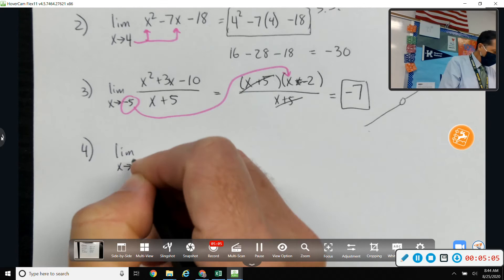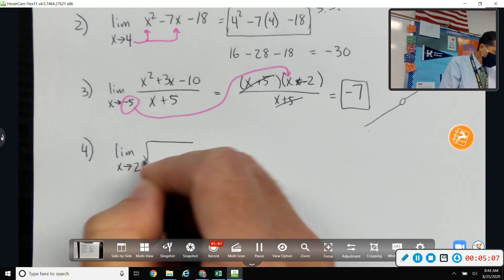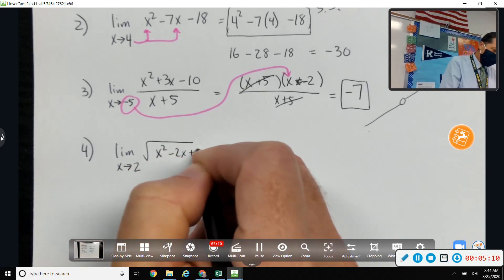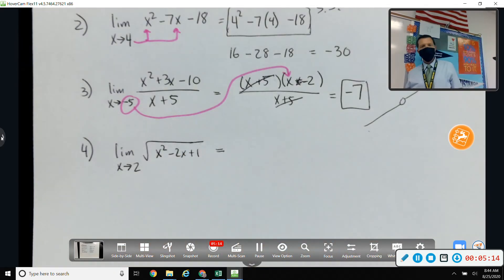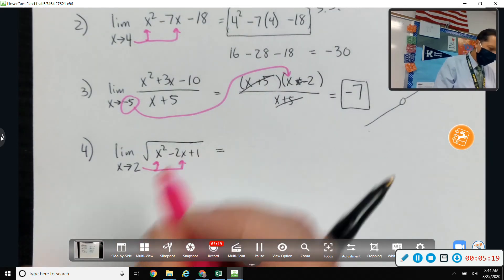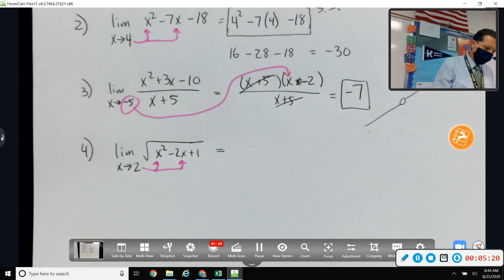Number 4. Limit as x approaches 2. x squared minus 2x plus 1. Well, square root, but I still think my first attempt is going to be substitution and see what happens. 4 minus 4 plus 1. And, again, you could leave it like that, although with the square root, you have to be careful. You have to make sure you're not taking the square root of a negative number. But, that's the square root of 1, which is 1. So, we're good.